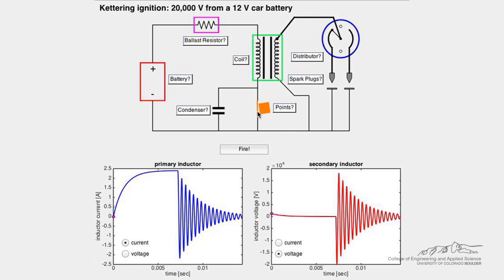When the points are closed, the capacitor is short-circuited out of the primary circuit, and the primary circuit is a simple RL circuit. During this process, current is stored in the primary inductor.